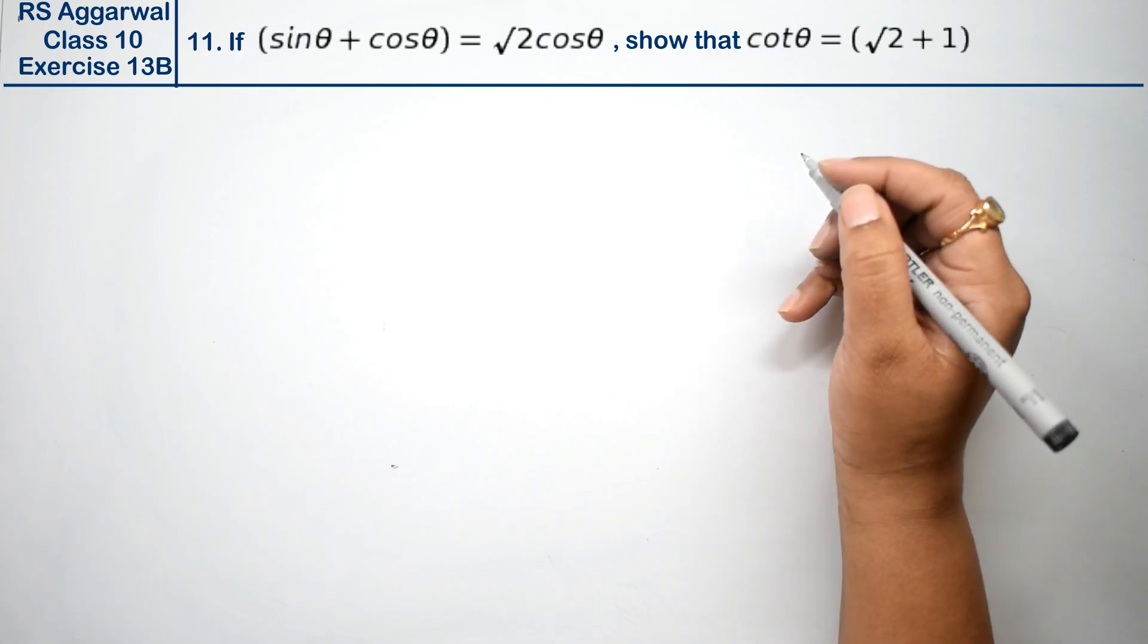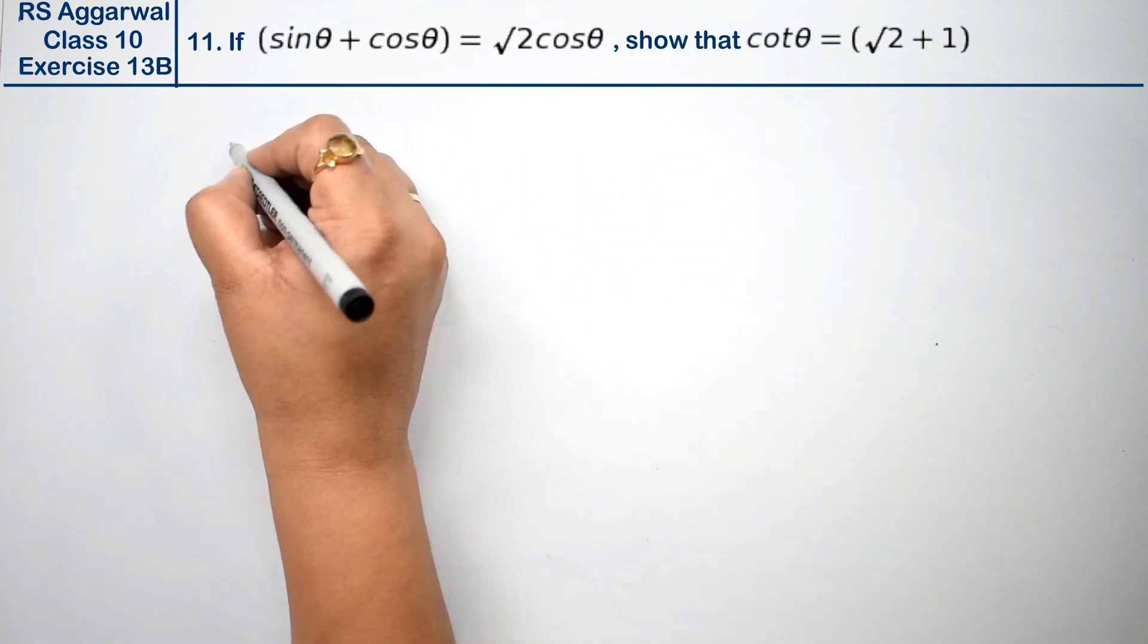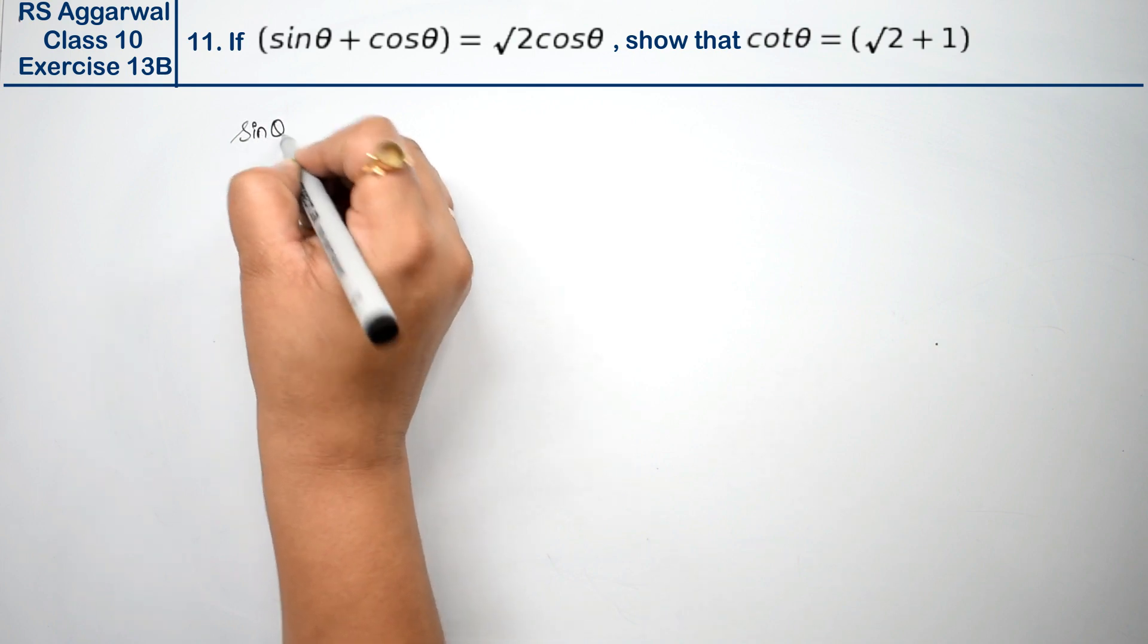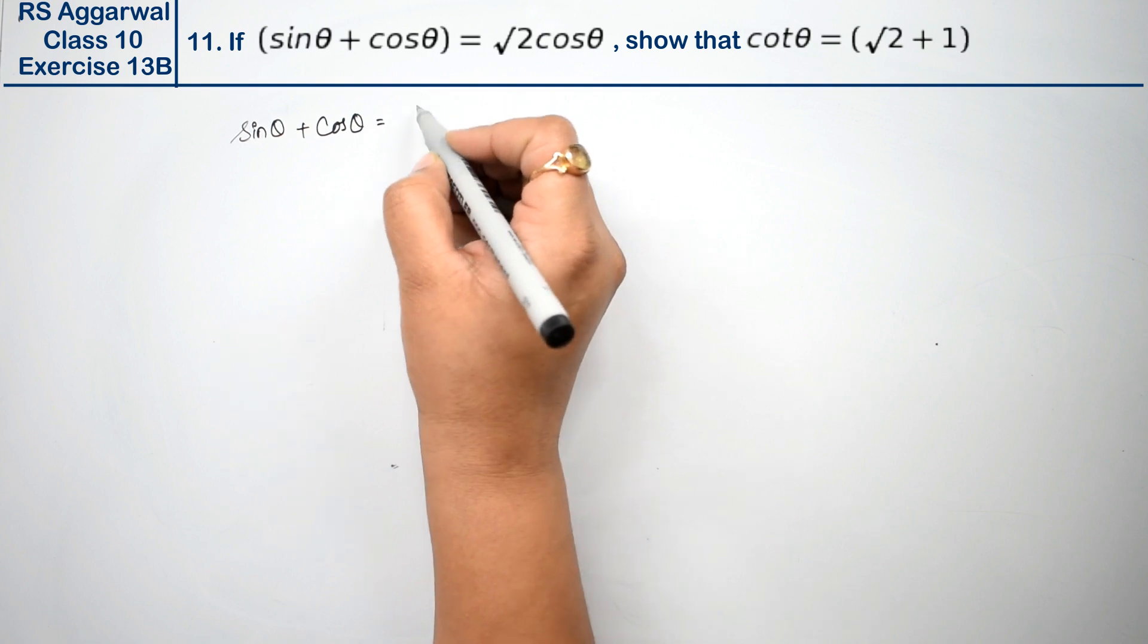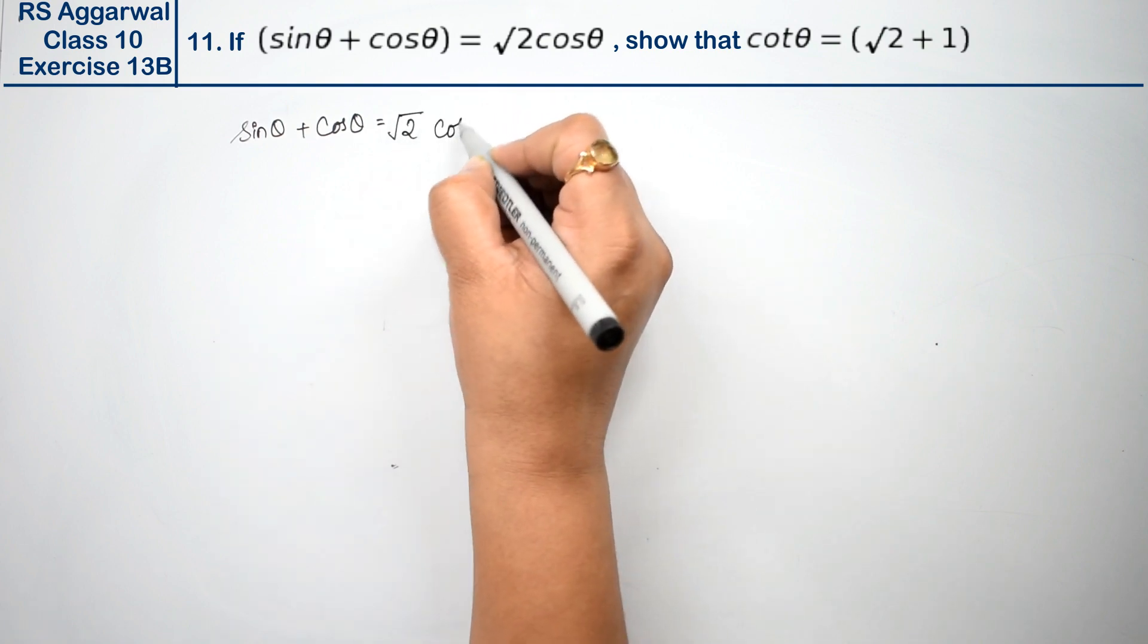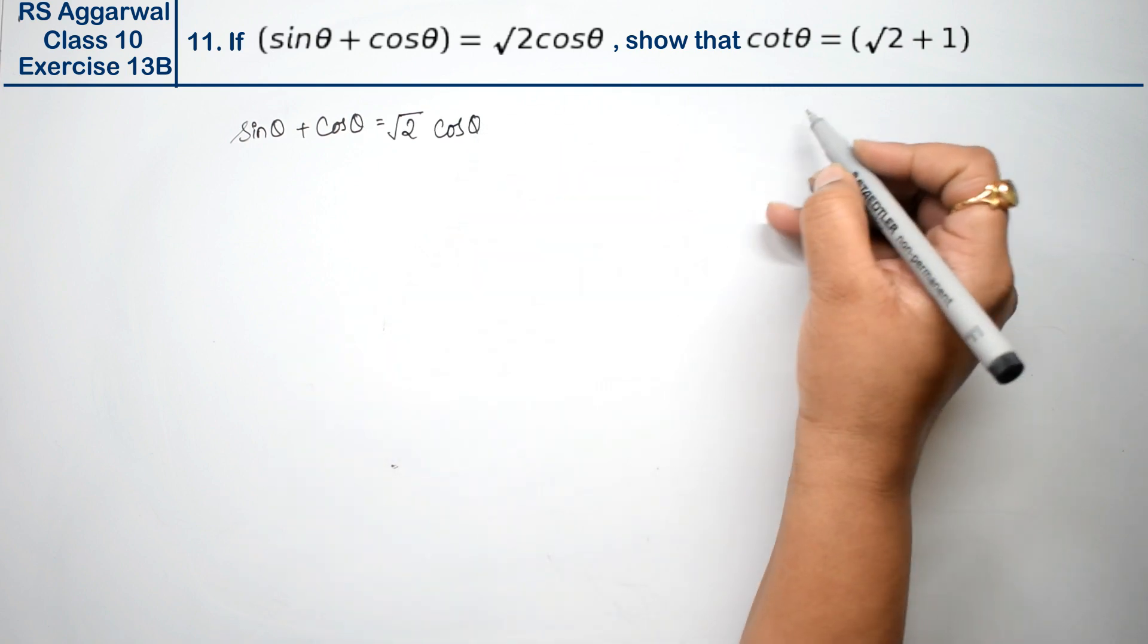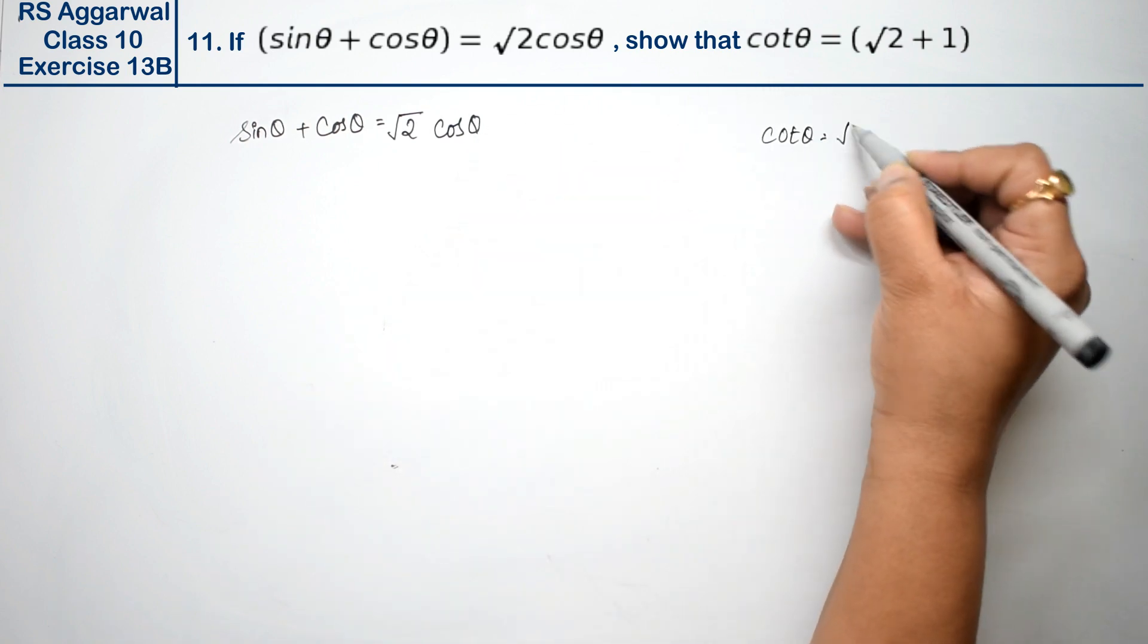Let's do question number 11 of exercise 13B, trigonometric identities. Question 11 is: if sin theta plus cos theta equals root 2 cos theta, show that cot theta equals root 2 plus 1.